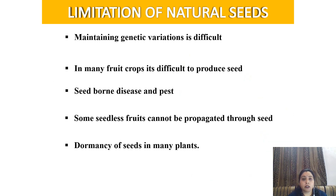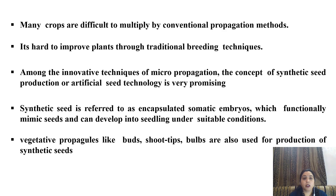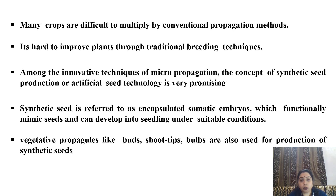Natural seeds have many limitations. Maintaining genetic variations is difficult in natural seeds. In many fruit crops, it is difficult to produce seeds. Seed-borne diseases infest. Some seedless fruit cannot be propagated through seed. Dormancy of seeds in many plants is an issue. Many crops are difficult to multiply by conventional propagation methods. It is very hard to improve plants through traditional breeding techniques, and it is very hard and time consuming.